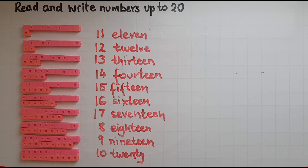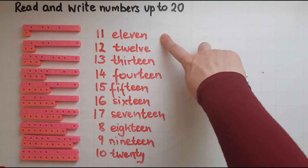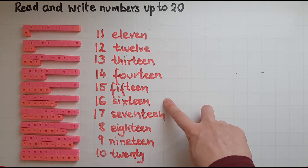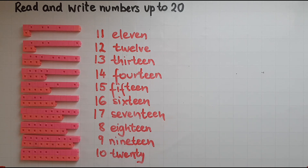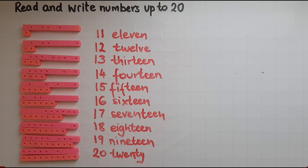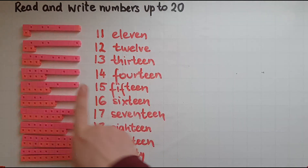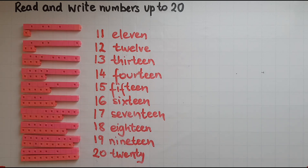So going back to the numbers: we did zero, one, two, three, four, five, six, seven, eight, nine, ten. Now we have eleven, twelve, thirteen, fourteen, fifteen, sixteen, seventeen, eighteen, and twenty. All that we changed from the previous numbers up to ten was adding a one in front, which represents a block of ten every time, and the ten became a twenty.